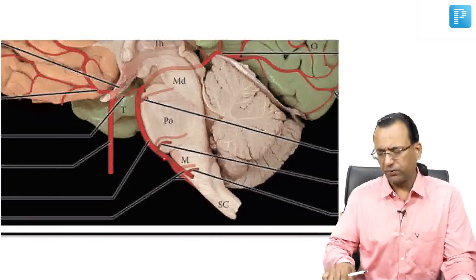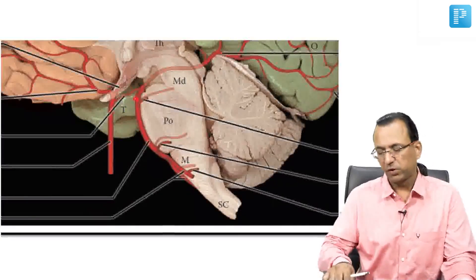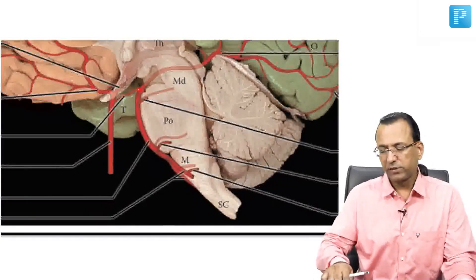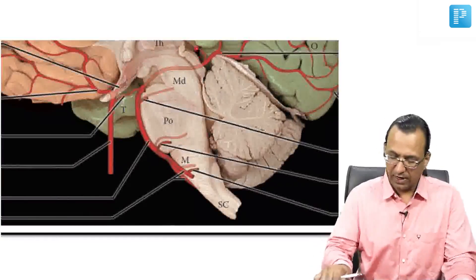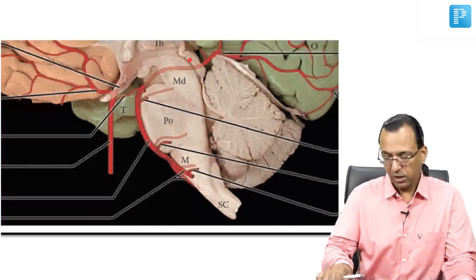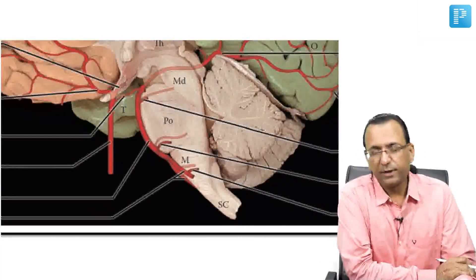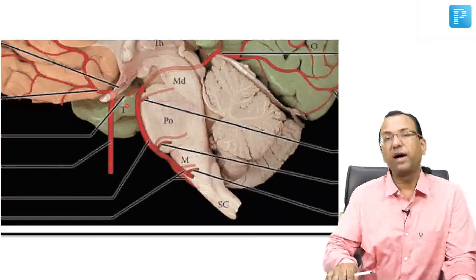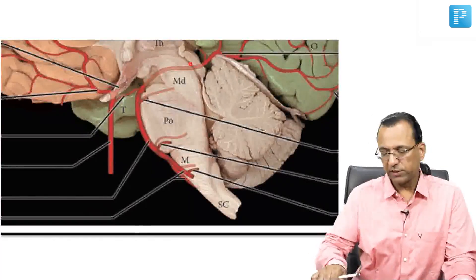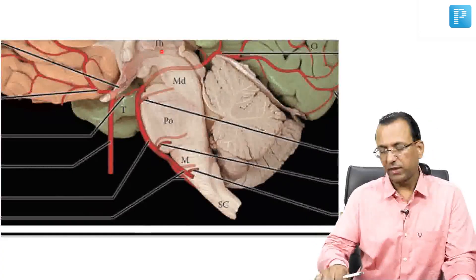There are two vertebral arteries, one on the right side and one on the left side. They join to form the basilar artery, which then divides to form the posterior cerebral artery. The posterior cerebral artery communicates with the branches of the internal carotid artery, and that is where you have the Circle of Willis at the base of the brain.